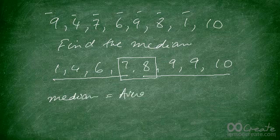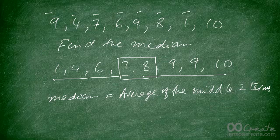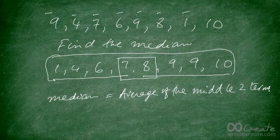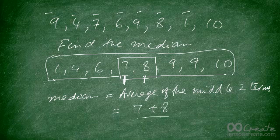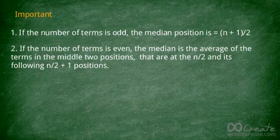When that happens, the median becomes the average of the middle two terms. That only happens when the number of terms is even. We had eight terms overall, which is even, so the middle terms are the fourth and fifth — that's 7 and 8. We add them and divide by two: 7 plus 8 over 2 gives you 7.5, so that's your answer.